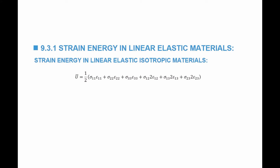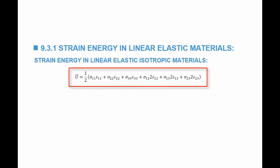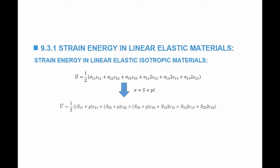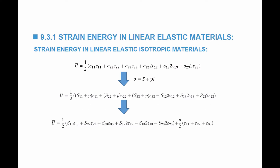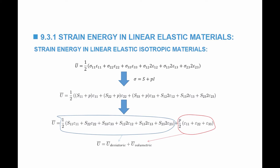For linear elastic isotropic materials, we want to show that the strain energy can be decomposed into two components: one due to change of volume and one due to change of shape. Starting with the general equation, we replace the stress with the deviatoric stress component plus p. The shear stresses stay the same, but the normal stress σ₁₁ equals s₁₁ plus the hydrostatic stress p. We can then separate the term with p — called the volumetric strain energy — from the deviatoric stress terms, called the deviatoric part of the strain energy.